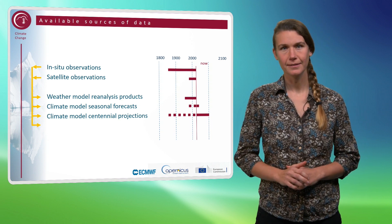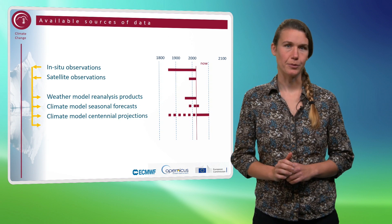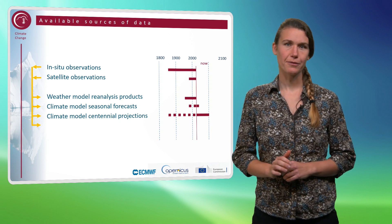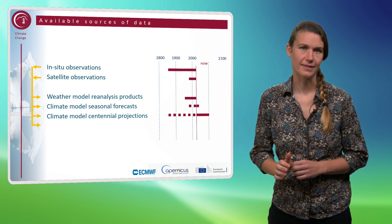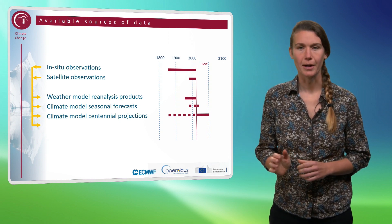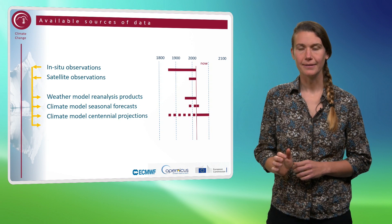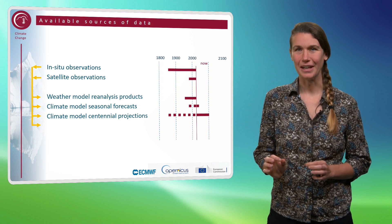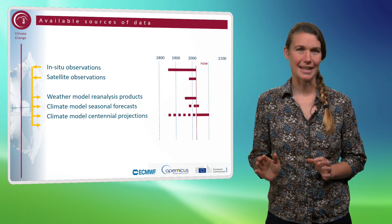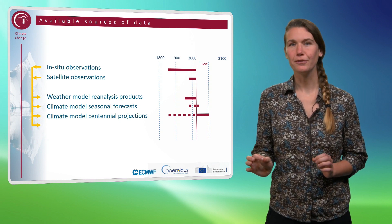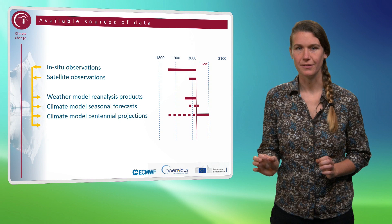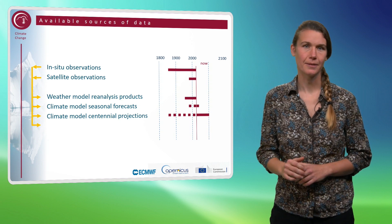Seasonal forecasts combine output from several state-of-the-art seasonal prediction systems, are updated every month — currently on the 13th day at 12 UTC — and cover a time range of six months.